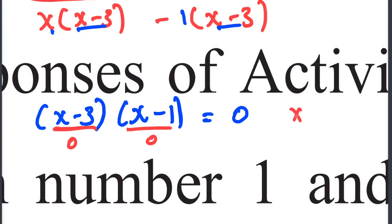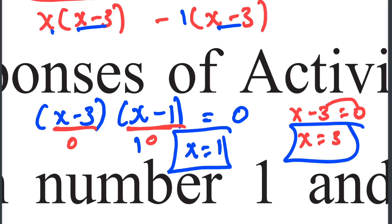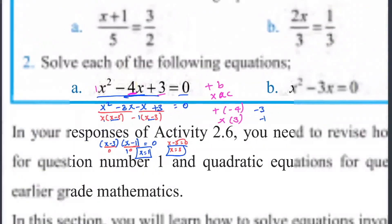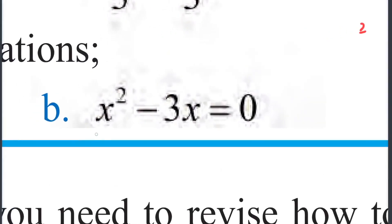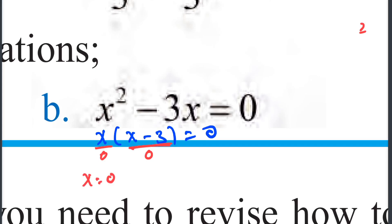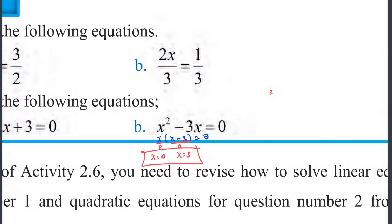x minus 3 equals 0, x minus 1 equals 0. So x equals 3, and x equals 1. Then x squared minus x equals 0. A zero minus x is zero. So x equals 0, or x equals 3 — these are the solutions.